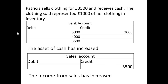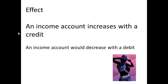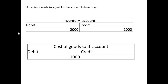She sells the clothing for £3,500 and receives cash. We debit the bank account with £3,500 and credit sales with £3,500 because the income from sales is increasing. The asset of cash is also increasing. Income account increases with a credit; it will decrease with a debit.